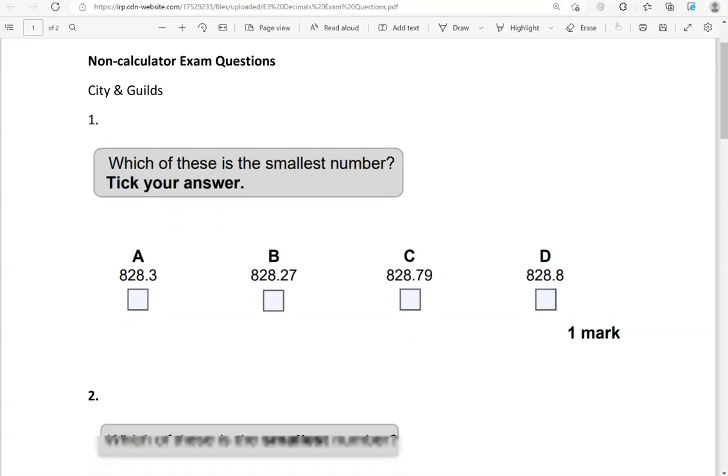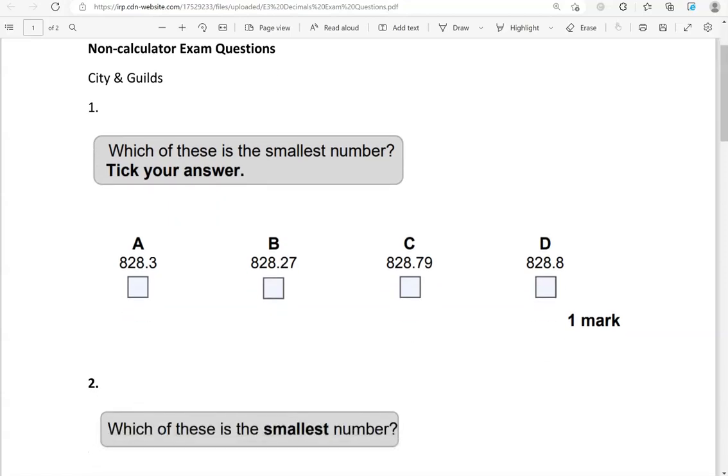Here's the first question. Which of these is the smallest number? Tick your answer. We've got 828.3, 828.27, 828.79, 828.8.